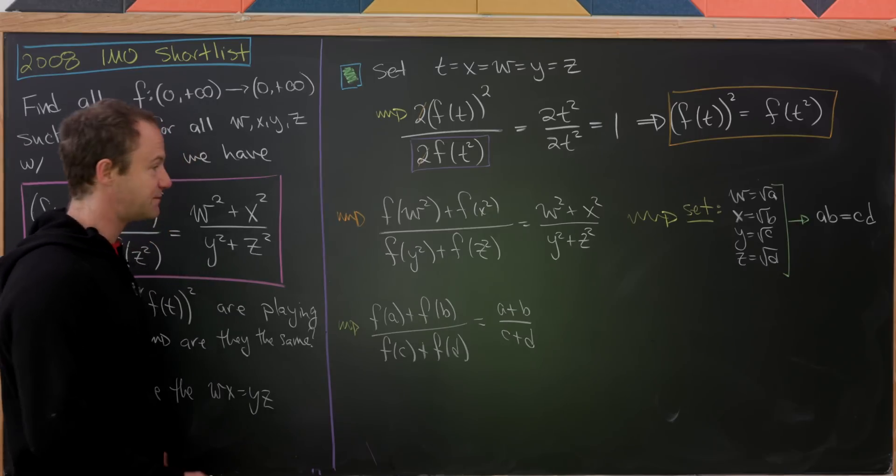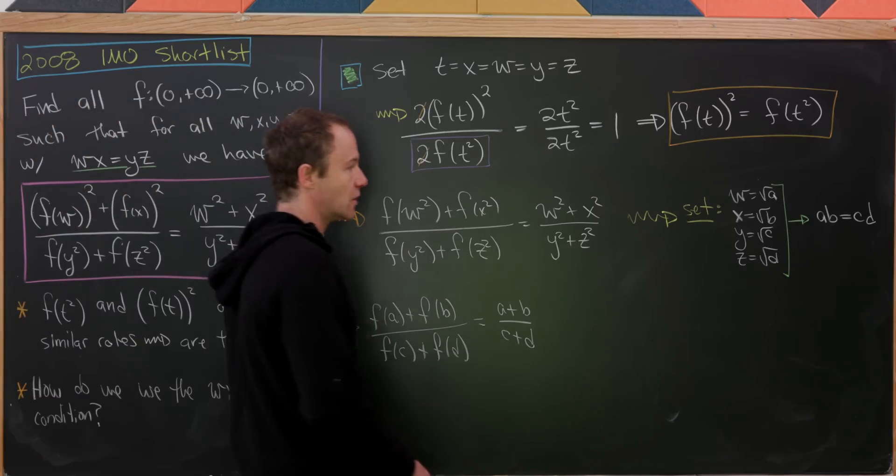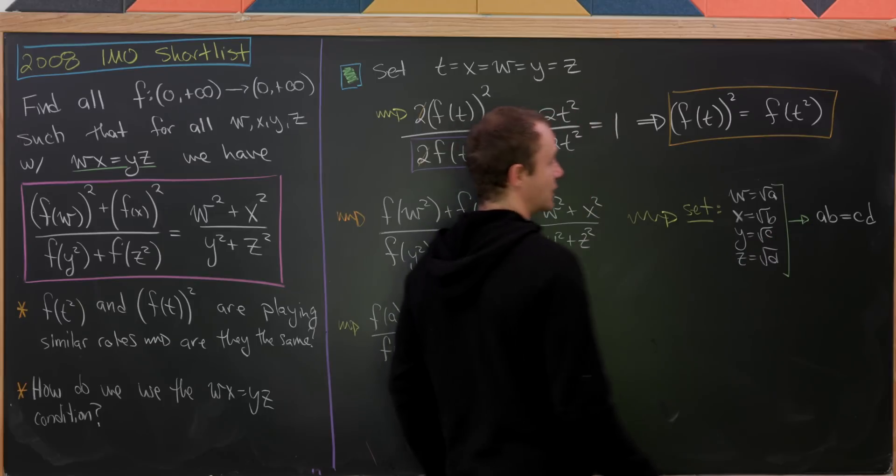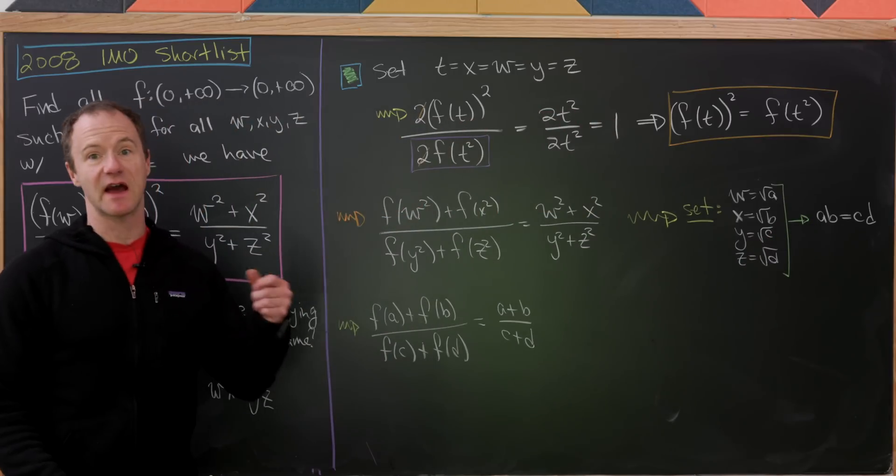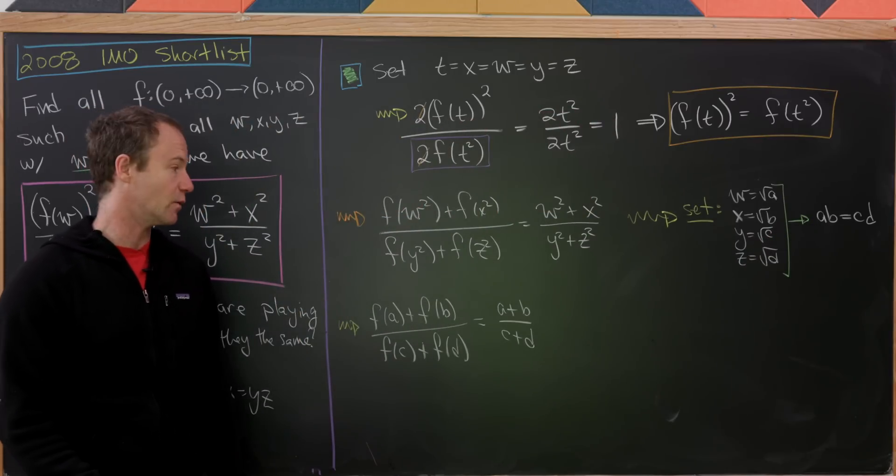Now we'd like to specify some of the values here. So as long as we have ab equals cd, we can specify a, b, c, and d to be anything we want. So I think this is maybe a good choice for simplification.